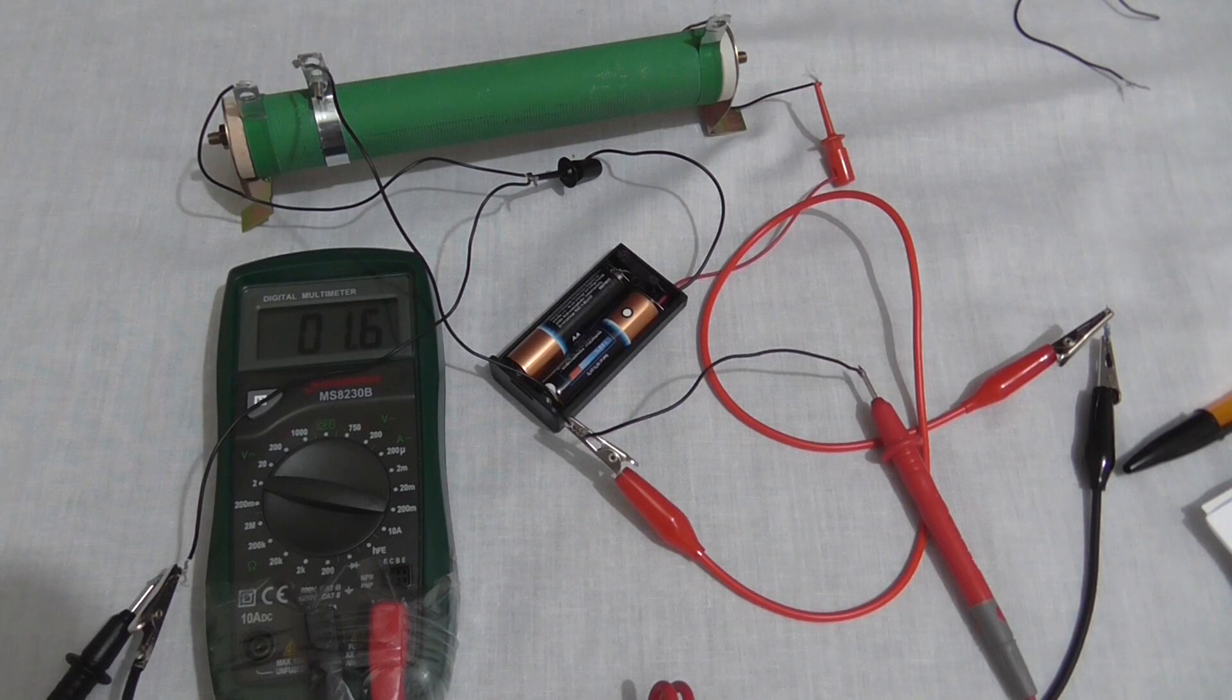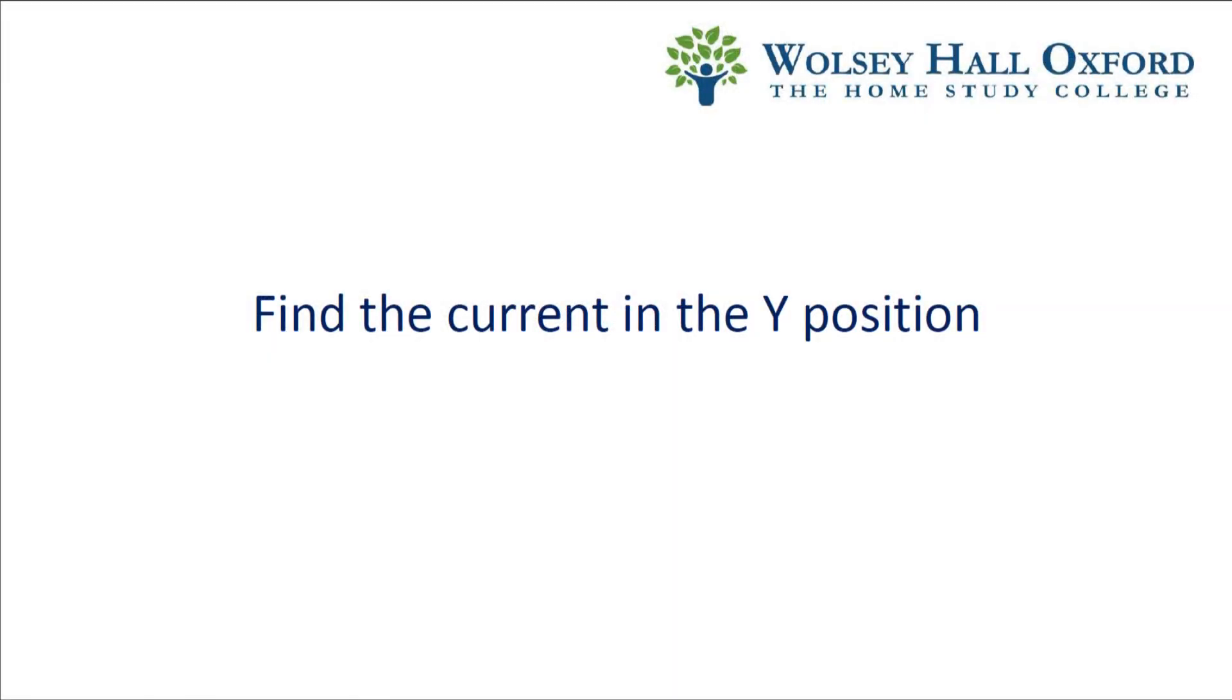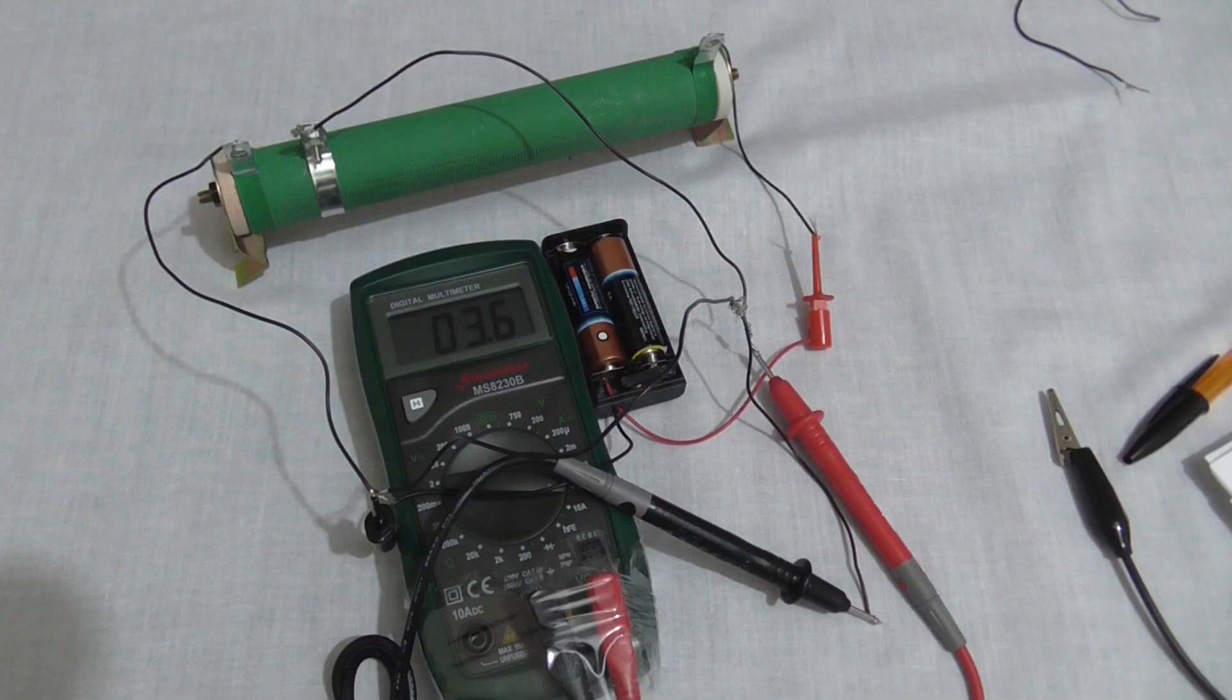Placing the multimeter in the X position gives a reading of 1.6 milliamps. Nothing else has been changed. Placing the multimeter in the Y position gives a reading of 3.5 milliamps. You can probably see my pen there, which I'm using to write my readings. Always a good idea.